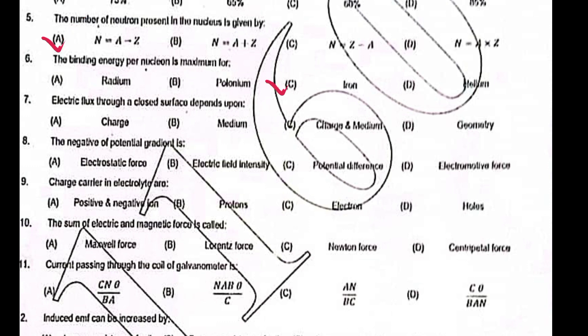iron. Electrical flux through a closed surface depends upon charge. The negative of potential gradient is electric field intensity. Charge carriers in electrolytes are positive and negative ions. The sum of electrical and magnetic force is called Lorentz force. Current